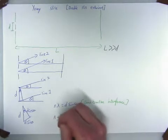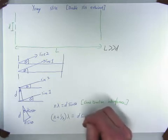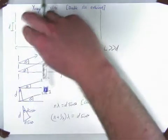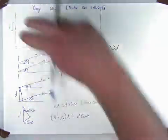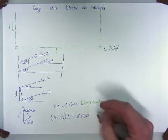Then n plus half lambda equals d sine theta. That's where when both of the light sources, when both of the monochromatic light sources are out of phase 180 degrees, plus destructive interference.